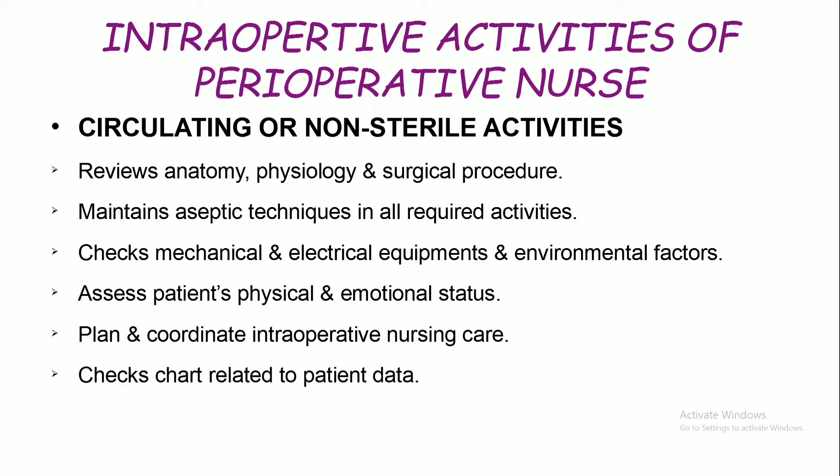There are two types of nurses in the OT room: the circulating nurse and the scrub nurse. The circulating nurse mainly reviews anatomy, physiology, and surgical procedure; maintains aseptic technique; checks mechanical and electrical equipment; assesses the patient's physical and emotional status; checks psychological status including pain; and plans and coordinates intraoperative nursing care.